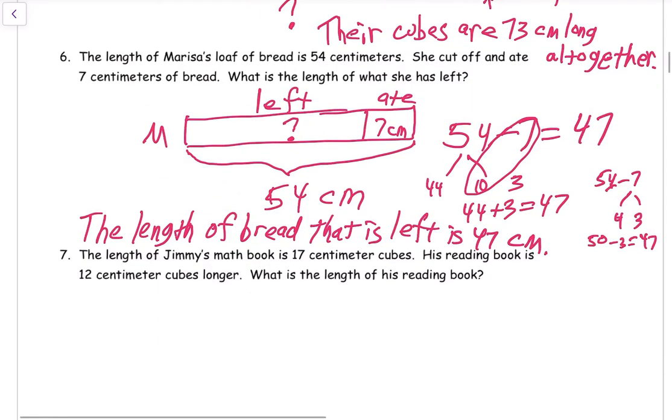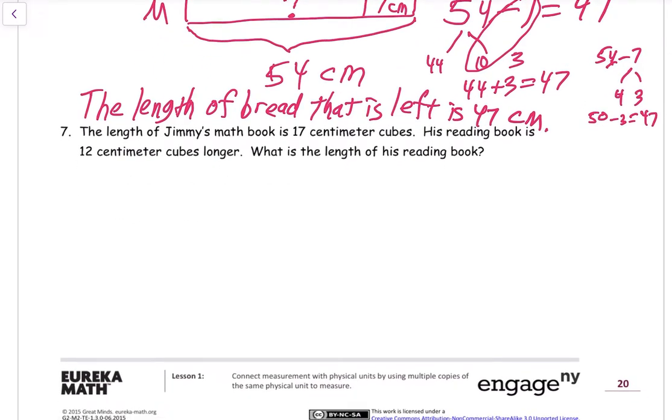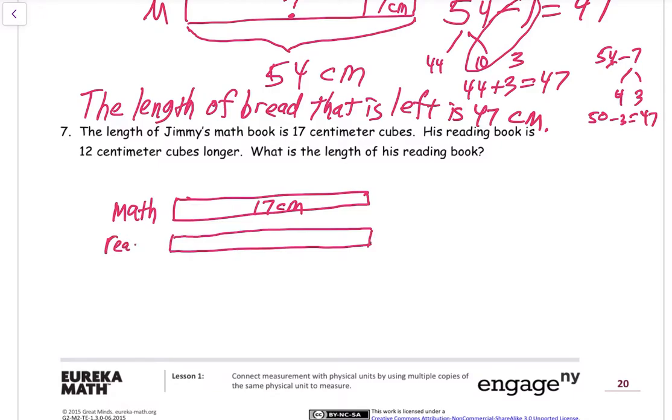There's probably a quicker way to write that or a shorter way to write it, but that's what I thought of. The length of Jimmy's math book is 17 centimeter cubes. His reading book is 12 centimeter cubes longer. What is the length of his reading book? So here we have his math book. We know how long that is. Math book. That's 17 centimeter cubes. His reading book, we don't know how long it is, but we do know it's longer than the math book, so let's make it longer.